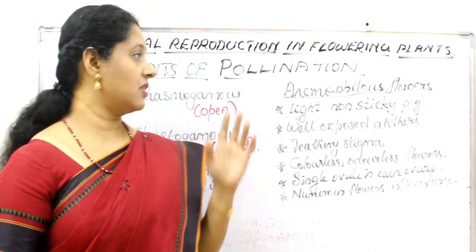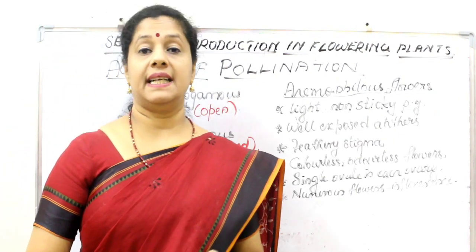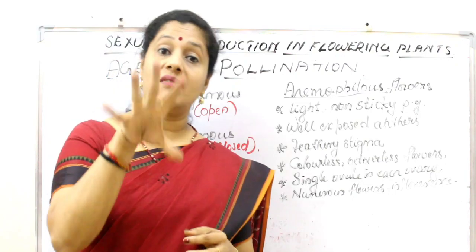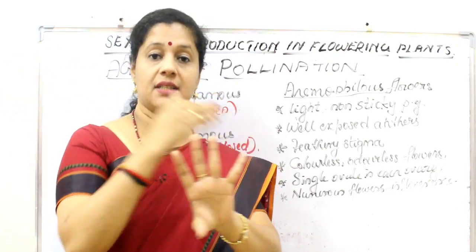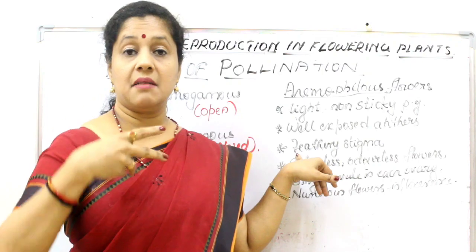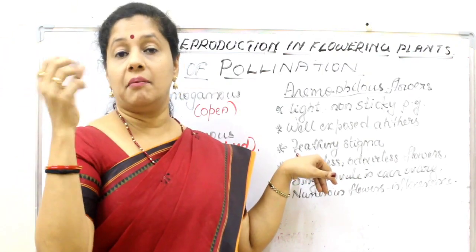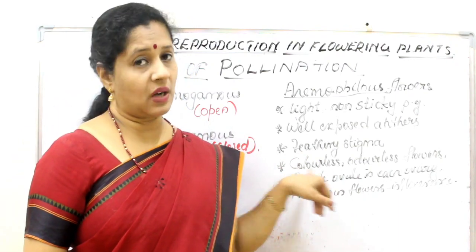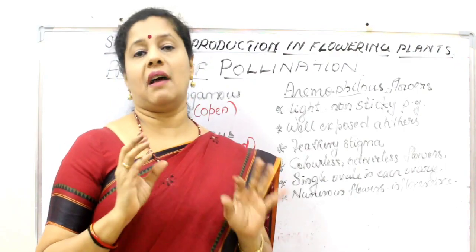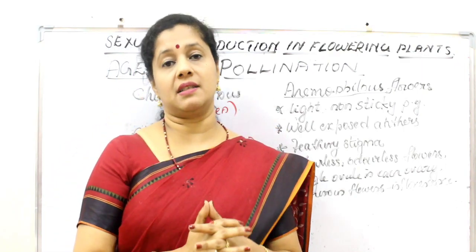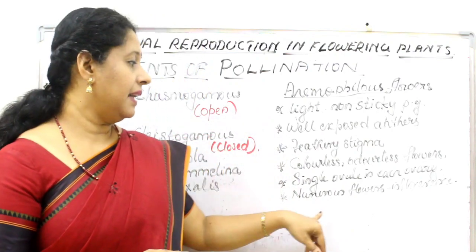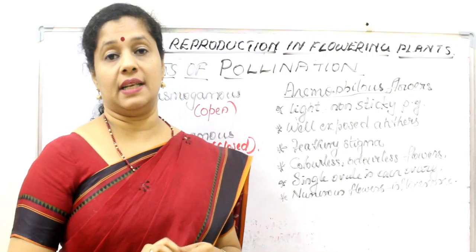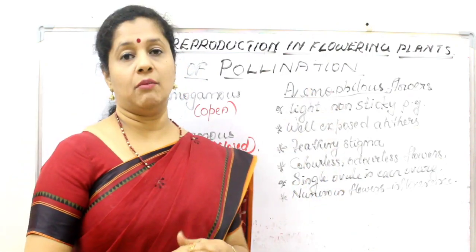Characteristics of wind-pollinated or anemophilous flowers: first, the pollen grains are light and non-sticky so they can be easily carried by wind currents. Anthers are well exposed so the wind can take the pollen grain. The stigma is feathery so it can trap pollen grains coming through the wind. Flowers need not be colorful and need not have fragrance — they are colorless and odorless. Flowers are very small and form packed clusters called inflorescences, and each flower has a single ovule in its ovary.